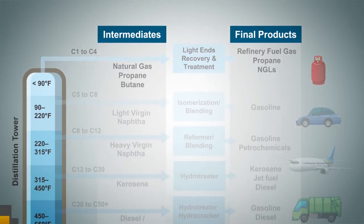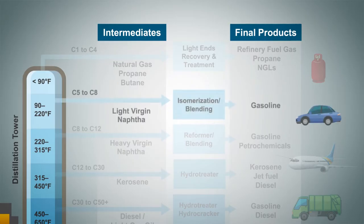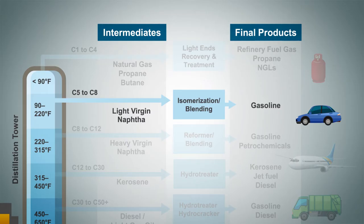As you move down the tower to the fraction with a boiling point range between 90 and 220 degrees Fahrenheit, you get what is referred to as light virgin naphtha, or light straight run. This material can be blended directly into gasoline as a low-octane blend component, or it can be sent to an isomerization unit where it's upgraded to a higher-octane component.